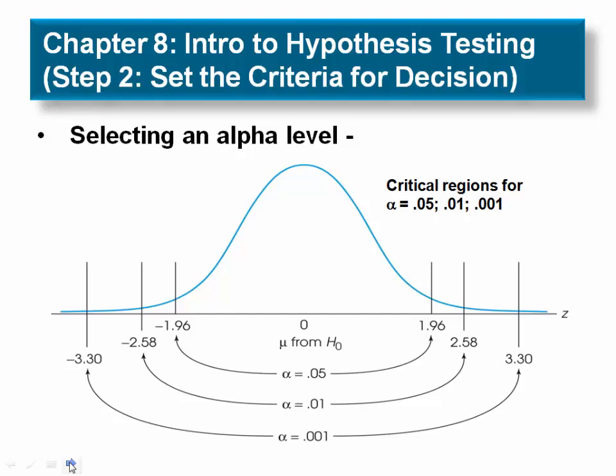The two possible selections are z equals 2.57 and z equals 2.58. If you map those two z-scores out on the horizontal axis, you would see that z equals 2.58 is one point further out into the tail. You would select z equals 2.58 because it is the more conservative choice, being the boundary to the critical region that is a little further out into the tail.